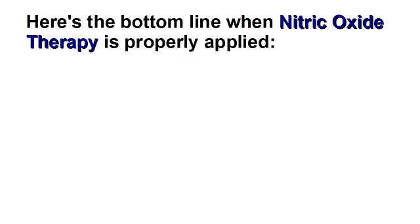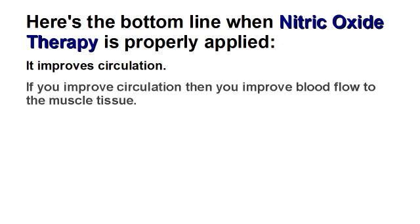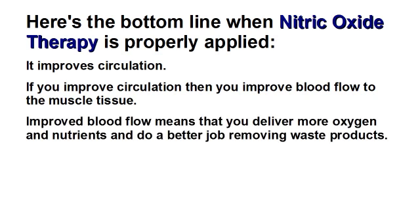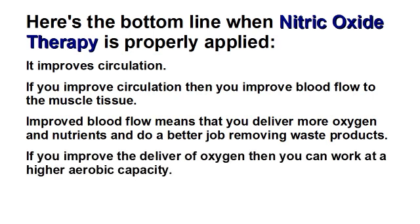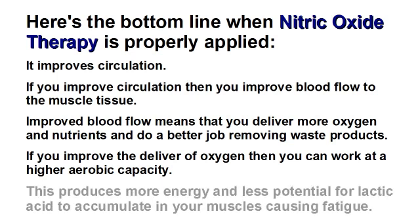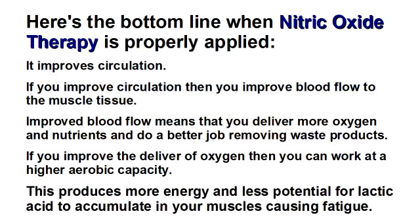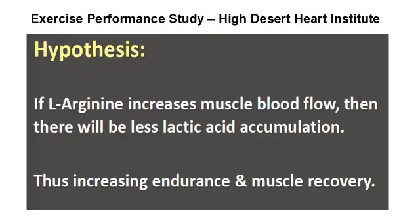But what if you could do this naturally, with legally approved ingredients that harness the power of nitric oxide therapy to improve circulation? Here is the bottom line. When nitric oxide therapy is properly applied, it improves circulation. If you improve circulation, then you improve blood flow to the muscle tissue. Improved blood flow means you are delivering more oxygen and nutrients and doing a better job removing waste products. If you improve the delivery of oxygen, then you can work at a higher aerobic capacity. This produces more energy and less potential for lactic acid to accumulate in your muscles, causing fatigue.